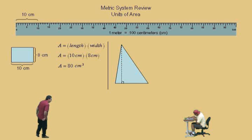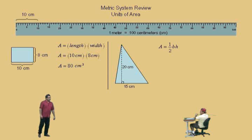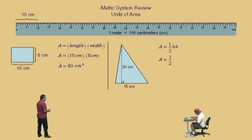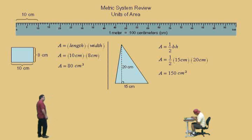Now let's do this triangle. This triangle is fifteen centimeters long at its base, and its height is twenty centimeters. What's the area for a triangle? One-half base times height — you better know that one. Area is one-half, the base is fifteen centimeters, the height is twenty centimeters. The answer is one-hundred-fifty centimeters squared. You really don't need a calculator for that one either.